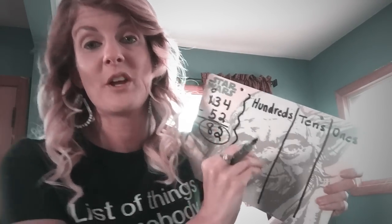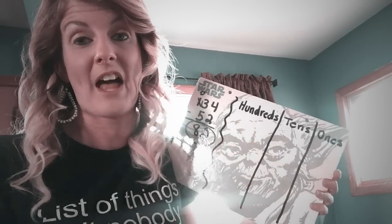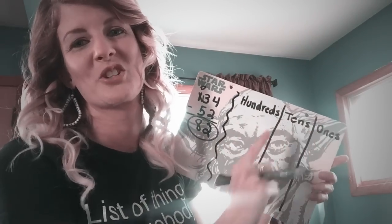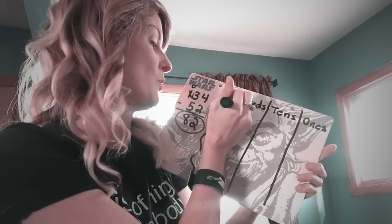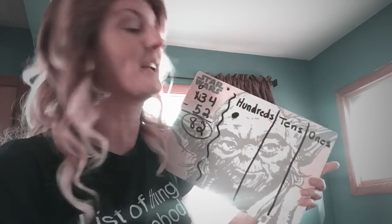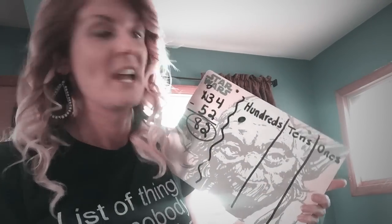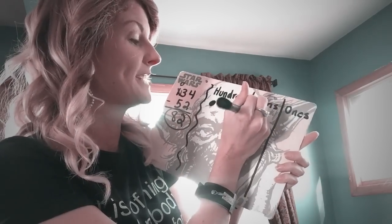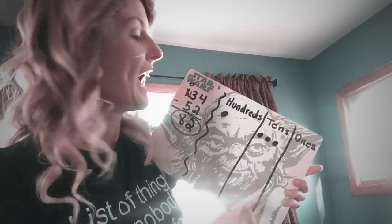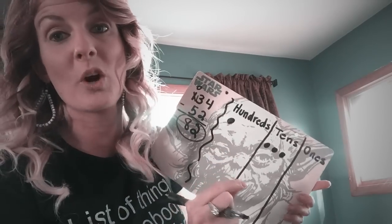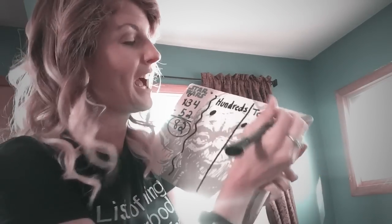Now we're going to go ahead and solve it using the place value chart. I've already gone ahead and made the chart for us. We have the hundreds place, the tens place, and the ones place. In 134, there's only a one in the hundreds place. There is a three in the tens place, so we're going to make three dots. And there's a four in the ones place, so we're going to make four dots.